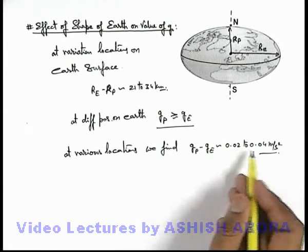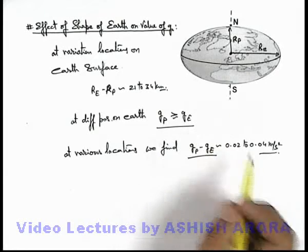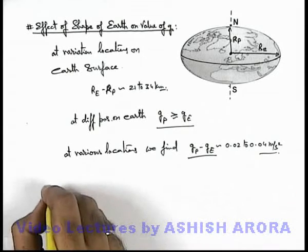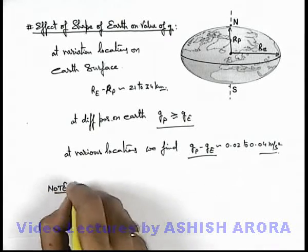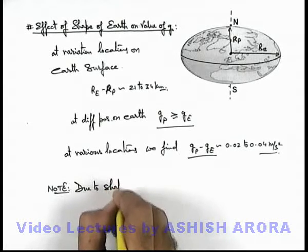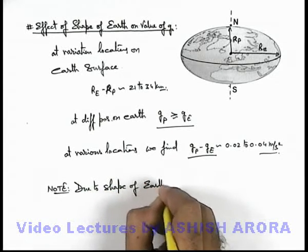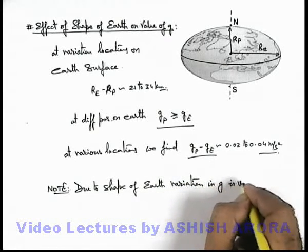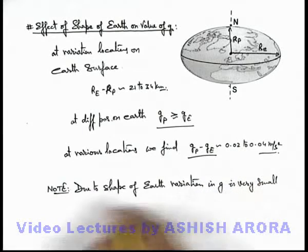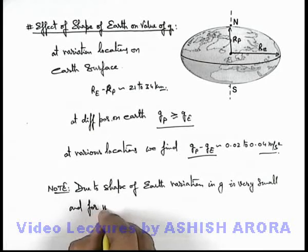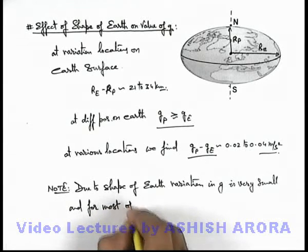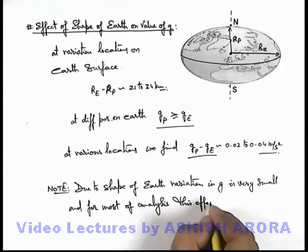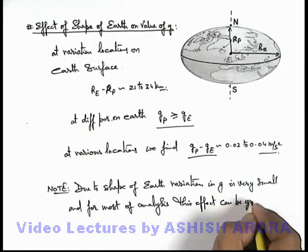We can say this difference in gravity due to the shape of earth is very small. So in most of the calculations, this effect can be neglected. You can also write down a note that due to shape of earth, variation in g is very small and for most of analysis this effect can be ignored.